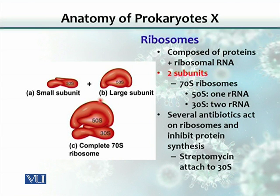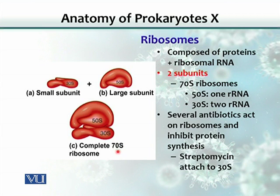When you combine these two subunits, the molecular weight does not simply add up. 50 plus 30 would suggest a weight of 80, but it is actually 70. This is because when the two subunits combine, their combined molecular weight, density, and size is not equal to 80 — it is equal to 70. That is why ribosomes in prokaryotes are called 70S ribosomes. However, if you split the units, the smaller subunit weighs 30S and the large subunit is 50S.